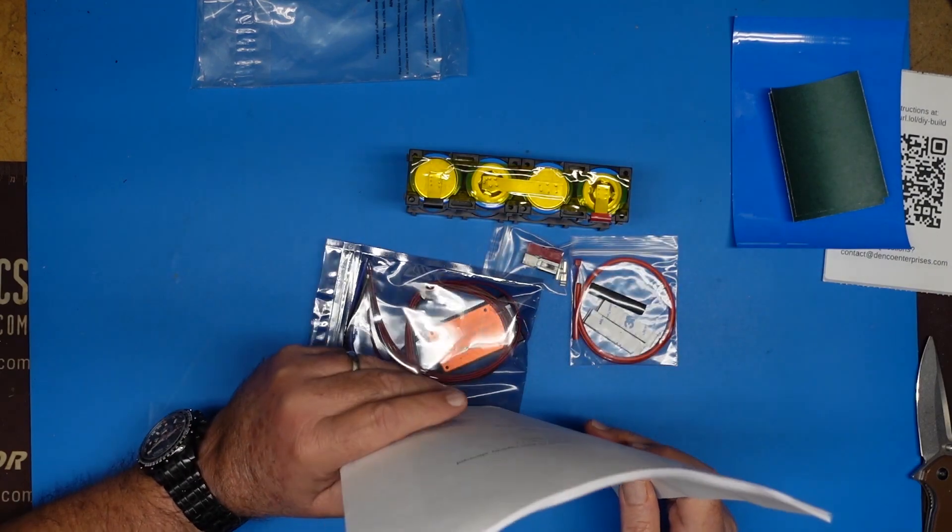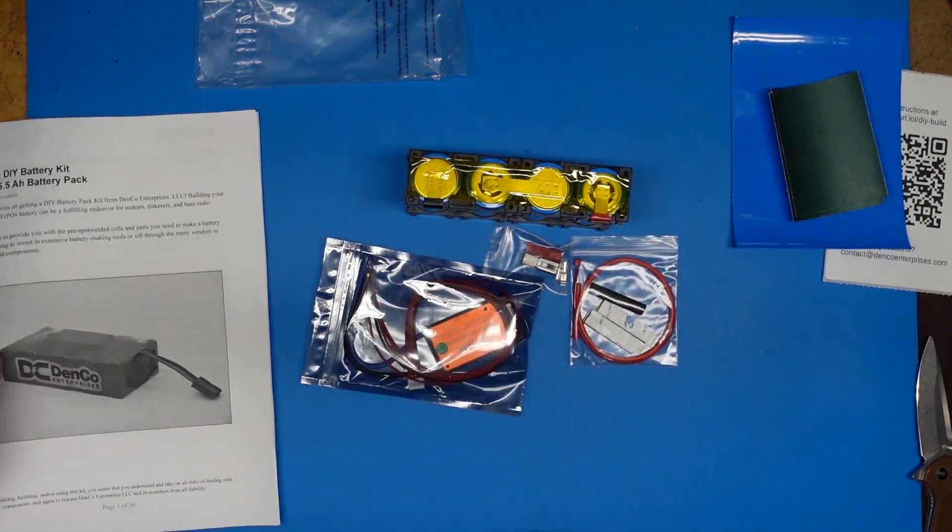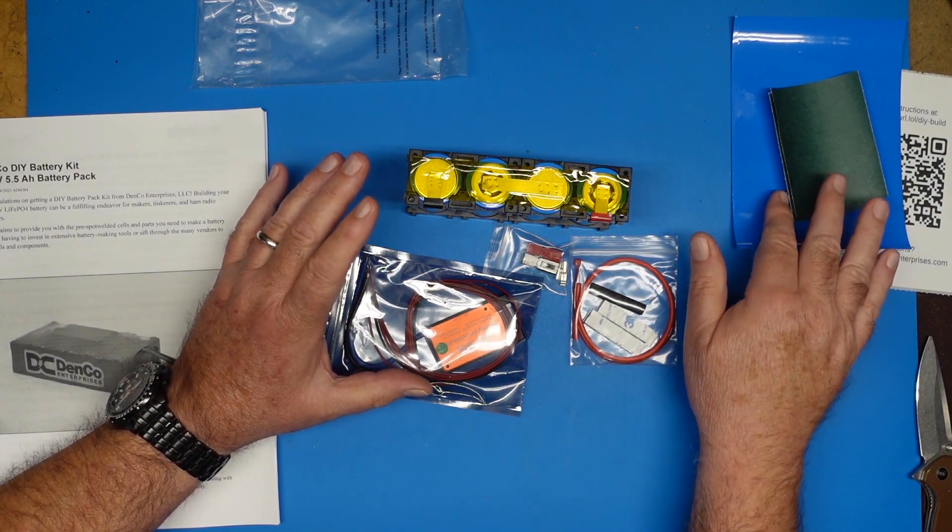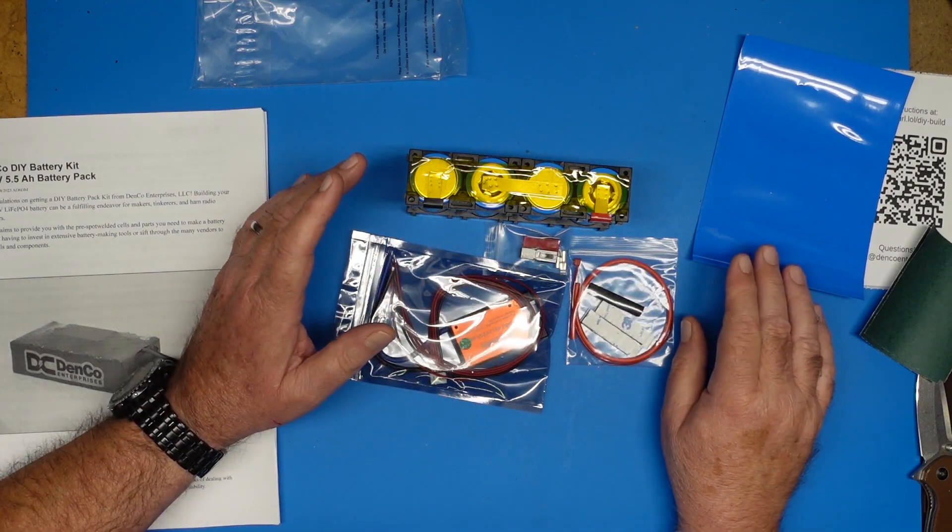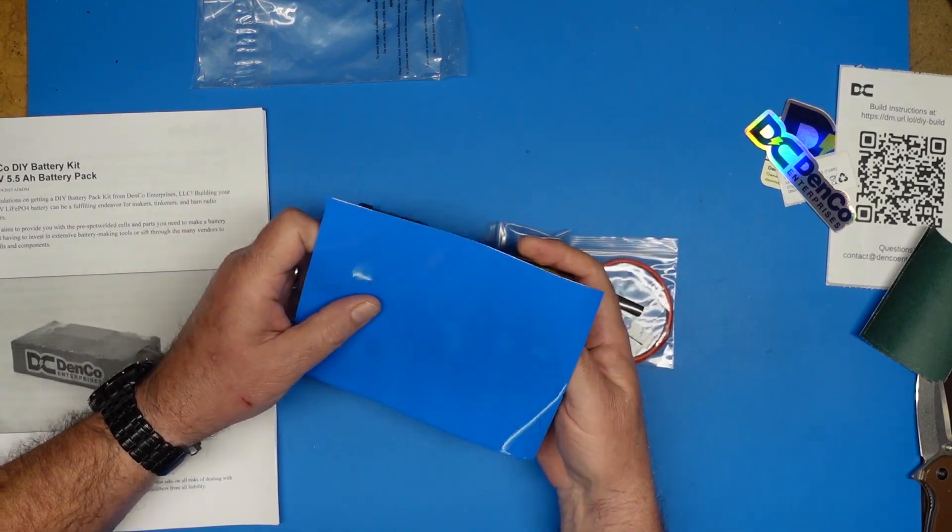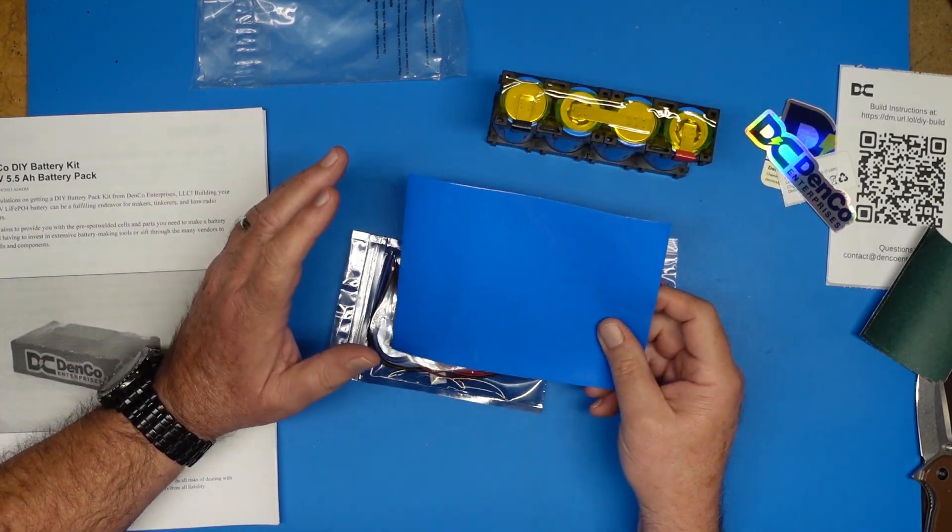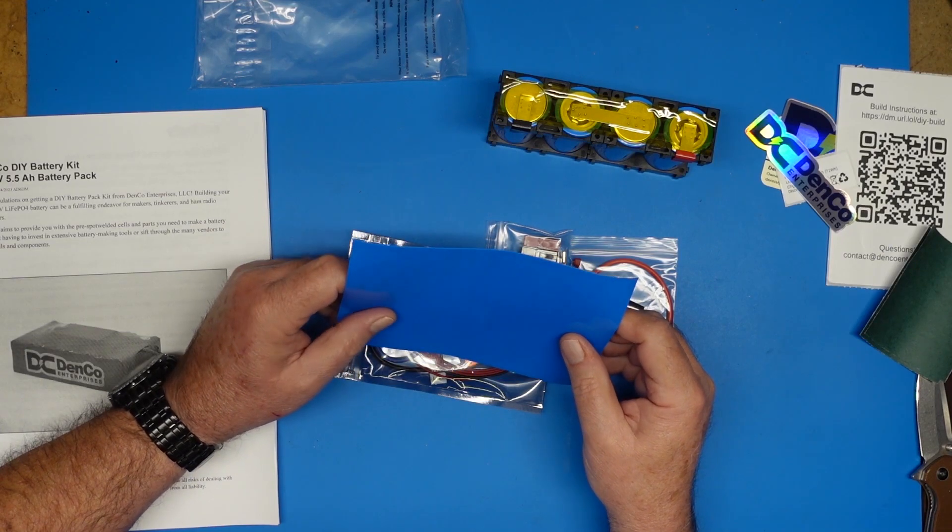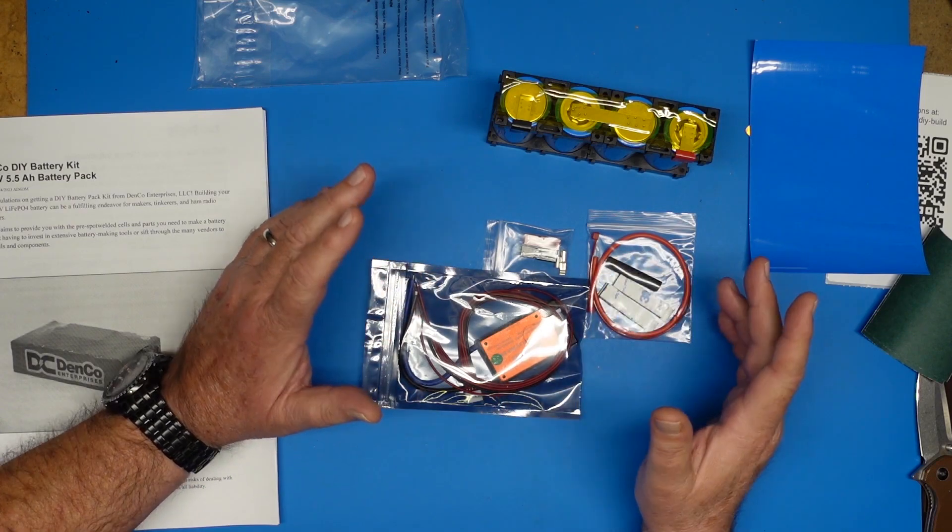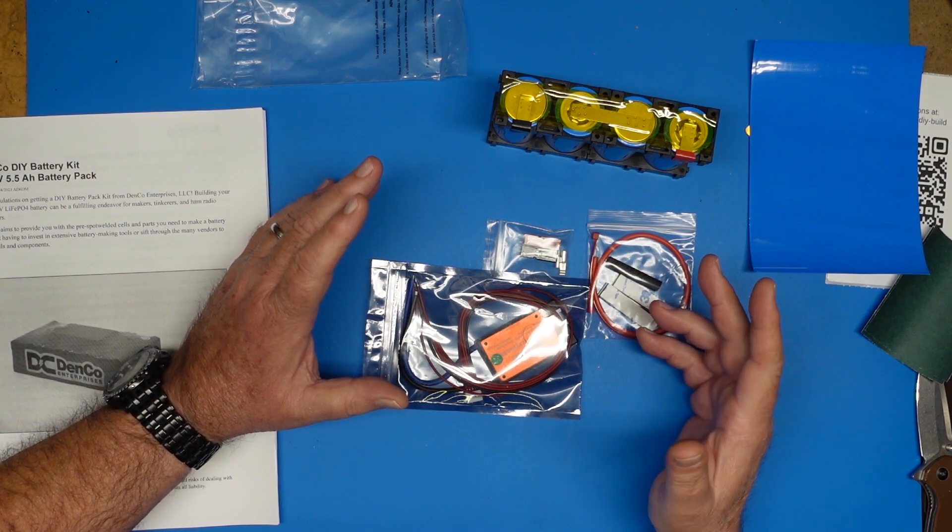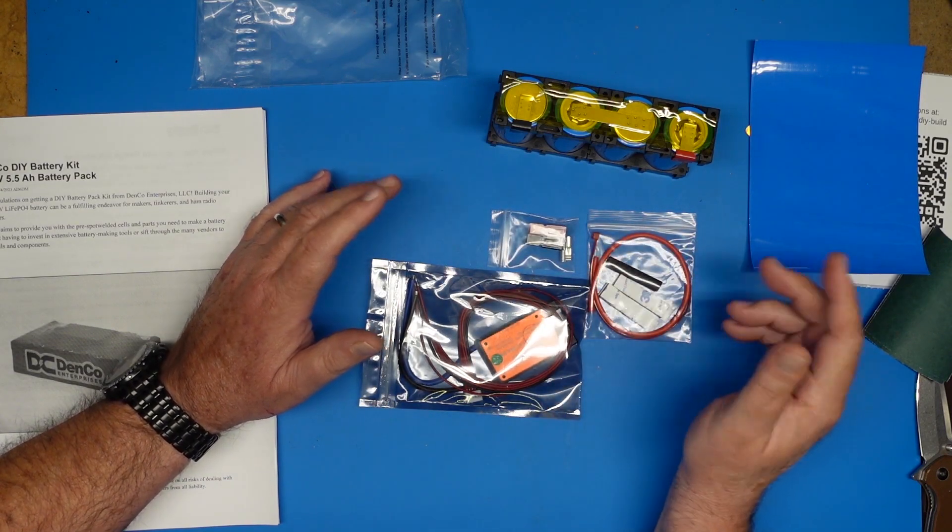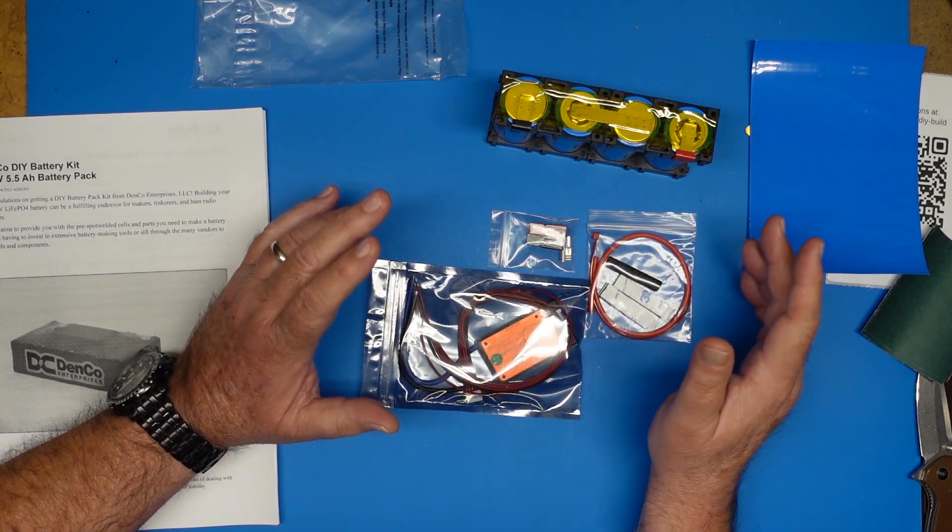Now, the only downside to this kit, if you could call it a downside, is it doesn't come with a case, a hard-sided case of any sort. So, obviously, this is not going to be a waterproof build, and it says that in the instructions. We're going to end up with a battery pack that's beautifully shrink-wrapped, but it will not be waterproof or outdoor-proof. So, once you've got the kit built, you may want to look at finding a case to put it in, something like a Tupperware case or like that, where you can minimize the exposure, run a couple of leads through for your power pole connections, and seal everything else off, something like that.